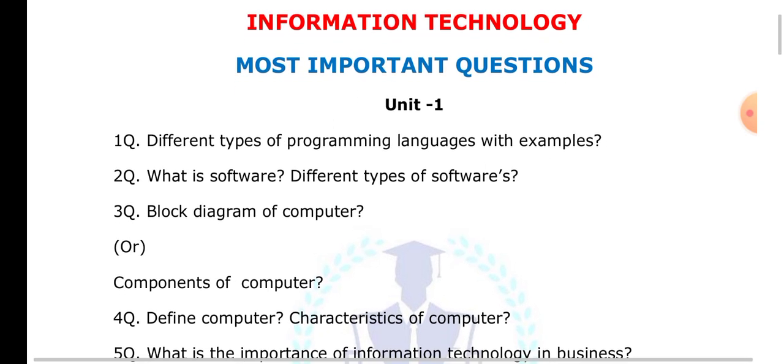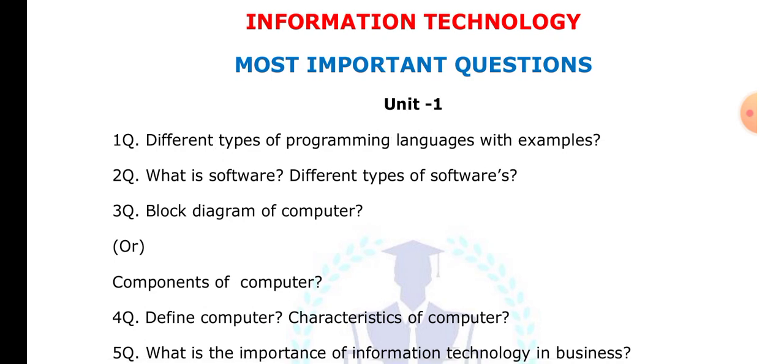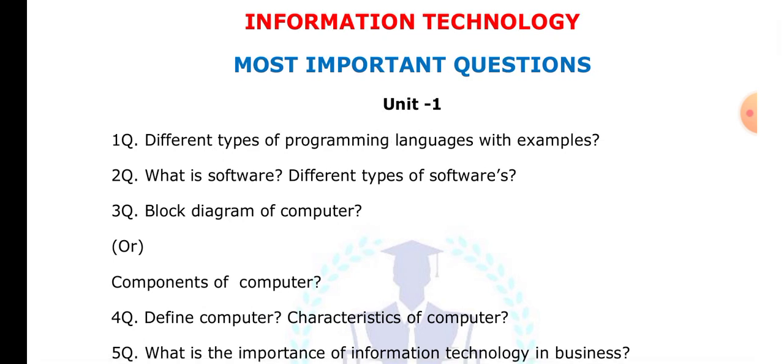Define computer. A computer is an electronic device which is used to accept input from the user, then process it, and finally generate the output. The computer works on a cycle called IPO — Input, Process, Output. The different characteristics of computers include speed, diligence, versatile, automation, and memory management. All these characteristics you have to explain.